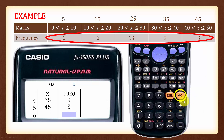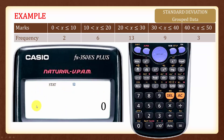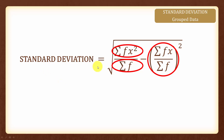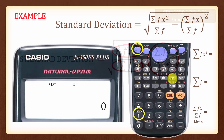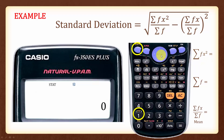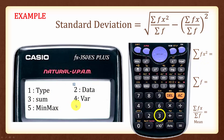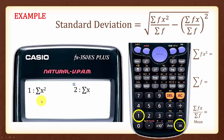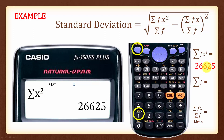Press the AC button, which is the all clear button, and this screen will appear. To recall, standard deviation is given by this formula. We will use the calculator to help us find the summation of fx², the summation of f, and the mean. To find the summation of fx², press Shift 1 to get the menu screen, then press 3 followed by 1, and finally equal. The summation of fx² will be 26,625.